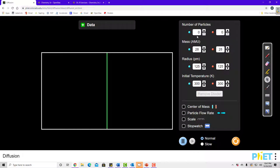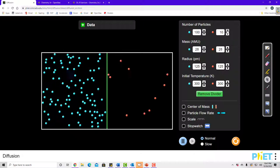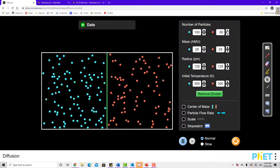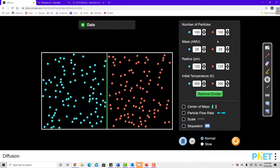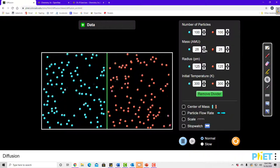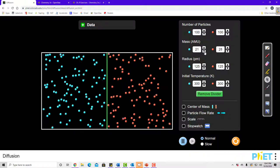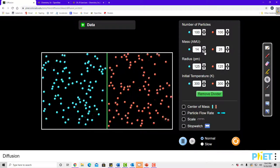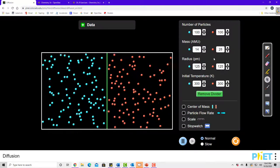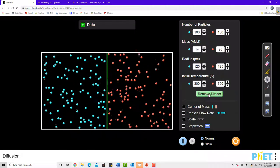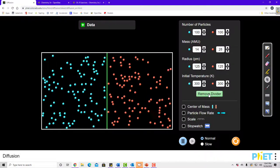So if I start another simulation here, and put a hundred particles in each side again, but this time I make the blue ones weigh half as much as the red ones, and I remove the divider, what do you think is going to happen?